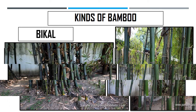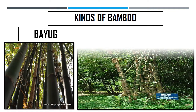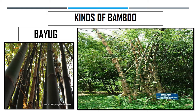We also have bayog. This kind of bamboo is quite tall and graceful, with slender stalks forming large clumps. The culms have thick walls and prominent nodes. It can also be used for weaving loom and other bamboo crafts.